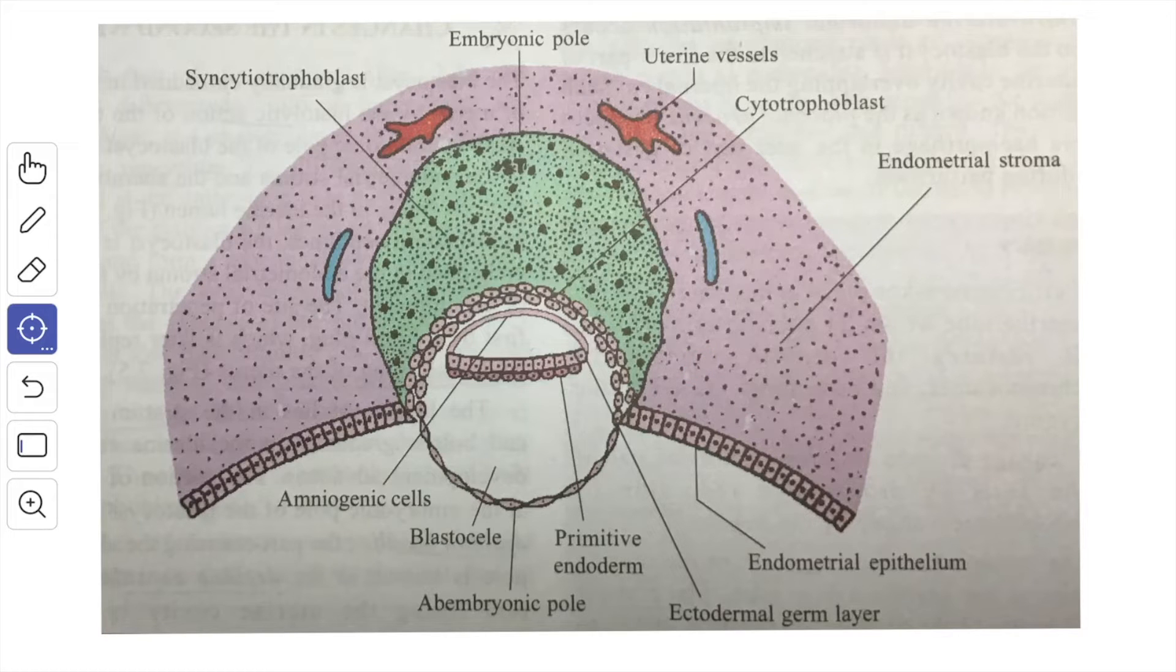Meanwhile, the cytotrophoblast differentiate internally into a layer of primary mesoderm. The trophoblast along with the primary mesoderm together form the chorion.